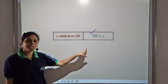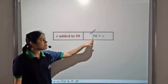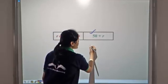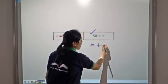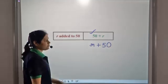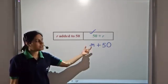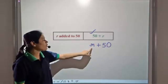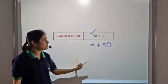An important thing to note here is that fifty plus r is the same as r plus fifty, because this is addition. Whether you add fifty to r or you add r to fifty, it remains the same.